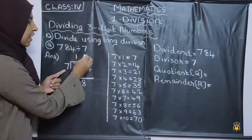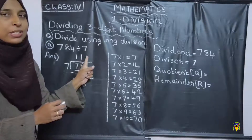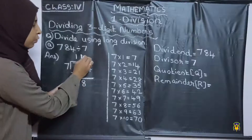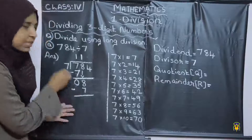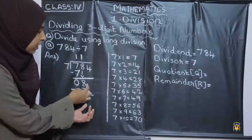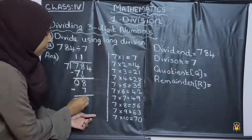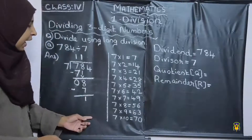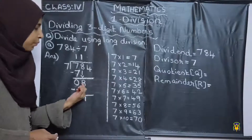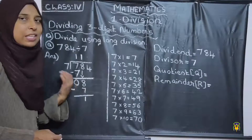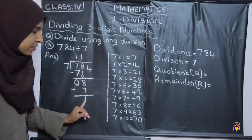So we can write 7 into 1. We want to write 1 above the 8, that is above the 10th place digit. 7 into 1 is 7. Next step, we want to subtract. What is 8 minus 7? 8 minus 7 is 1, so we can write 1. Writing 0 before a number means there is no value, so I am going to write only 8 minus 7, that is 1.